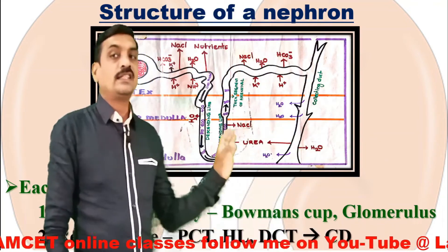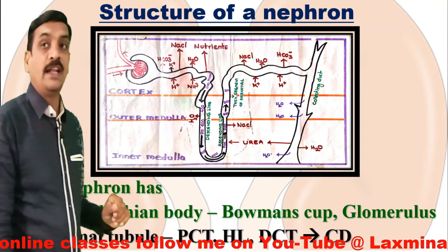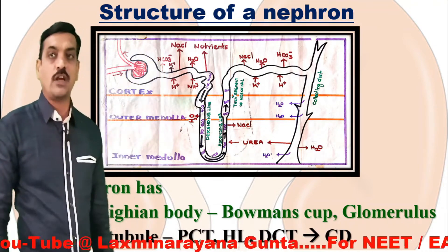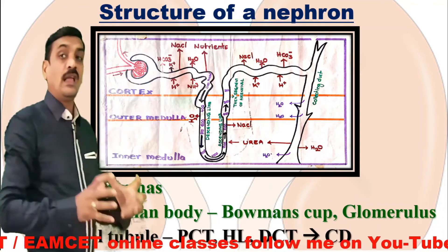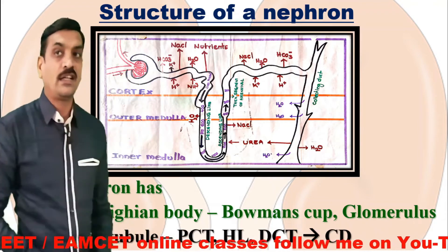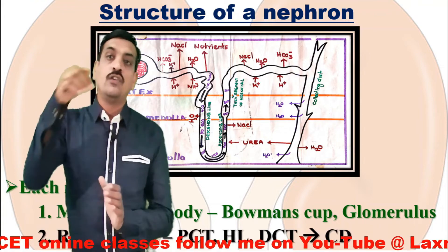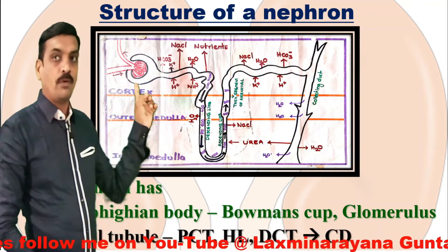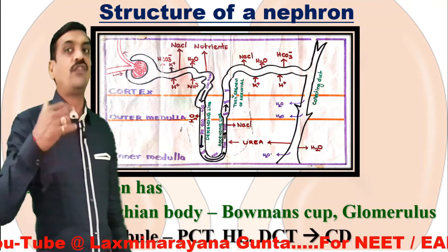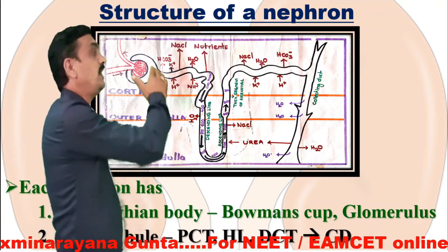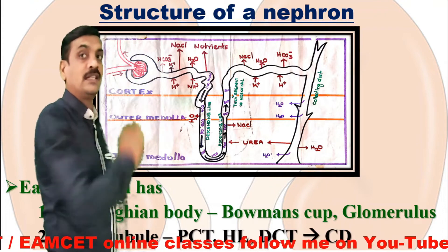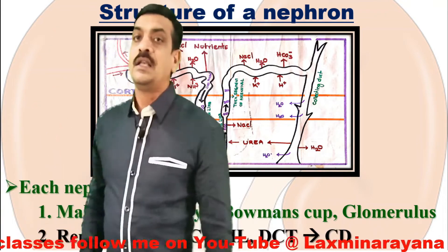Each nephron has a Malpighian body and a renal tubule. The Malpighian body consists of a Bowman's capsule and a glomerulus. This cup-shaped structure is called the Bowman's capsule. Within the Bowman's capsule there is a bunch of capillaries formed by an afferent arteriole — the arteriole which brings blood into the Bowman's capsule. The efferent arteriole takes away blood from the Bowman's capsule. The Bowman's capsule and glomerulus together are called the Malpighian body.